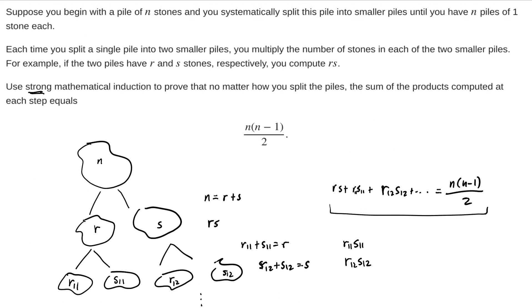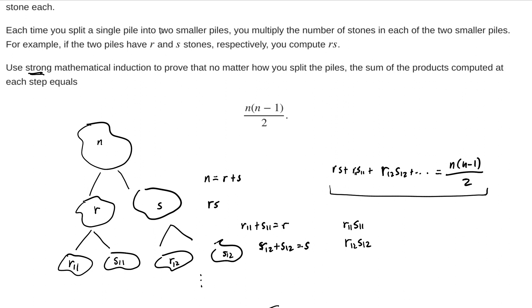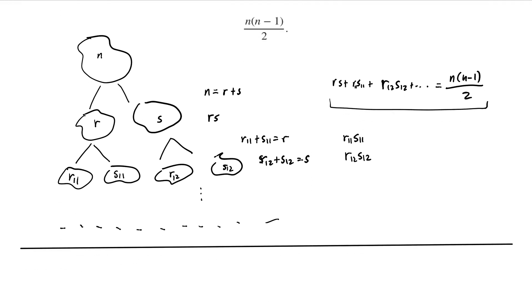The base case is going to be when we can't split a single stone into two. So the smallest number — the base case we need to check — is when n equals 2: we have a pile of just two stones. Step one of any induction proof is always to prove the base case, and for this problem the base case is n equal to 2.